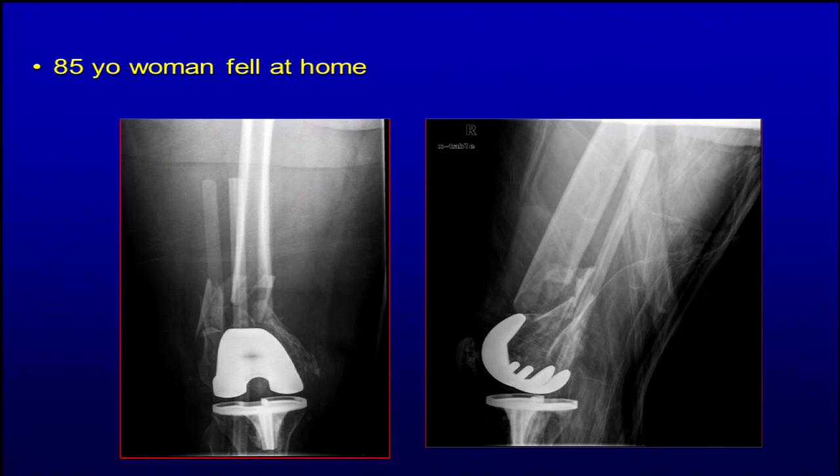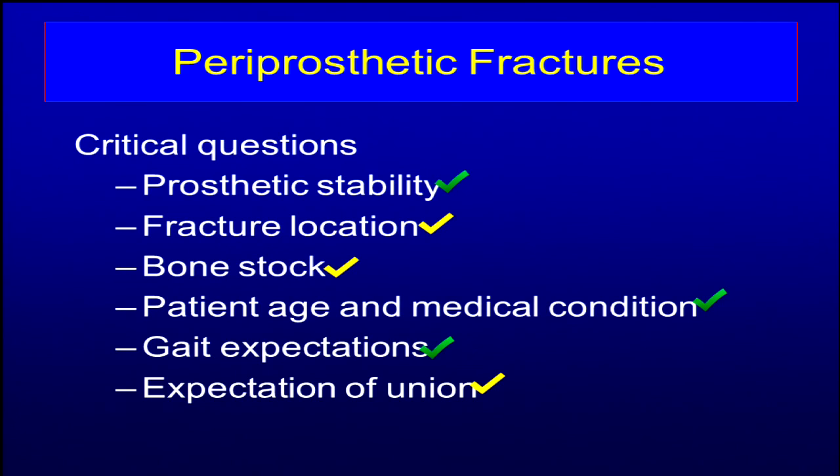This is the case we started with — comminuted, far distal segment, but there does seem to be some condylar bone that we might tap into. The prosthesis was stable. The fracture location is a little concerning. The bone stock is not as good as the first case. Patient age and physiology is not bad. They expect to walk again and we expect union, although that's not guaranteed.